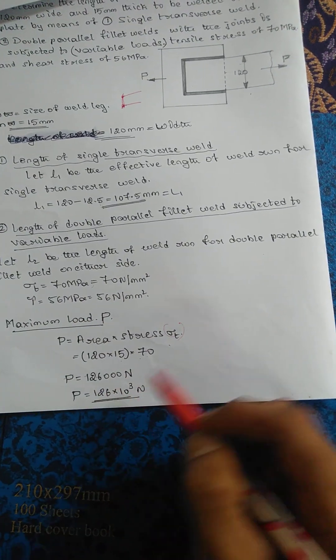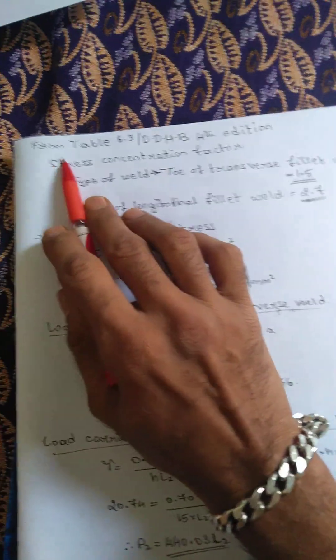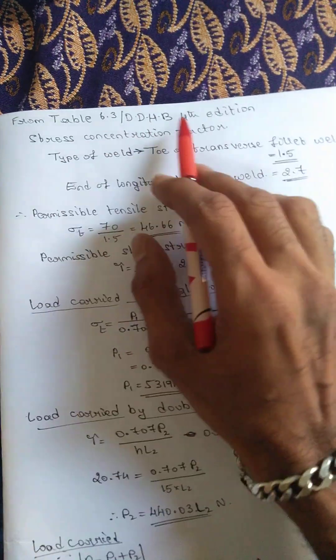Maximum load is equal to area into stress, this sigma t. So area is 120 into 15, width of the plate into thickness into 70 (sigma t), so you will get 126 into 10 to the power 3 newtons.